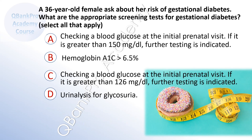A 36-year-old female asks about her risk of gestational diabetes. What is the appropriate screening test for gestational diabetes? A. Checking a blood glucose at the initial prenatal visit — if it is greater than 150, further testing is indicated. B. Hemoglobin A1C greater than 6.5%. C. Checking a blood glucose at the initial prenatal visit — if it is greater than 126, further testing is indicated.